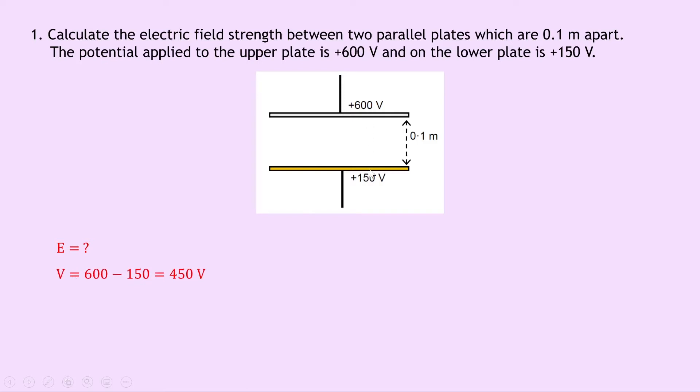Remember, between the upper and lower plate voltages. So we've got 600 minus 150, which gives us a potential difference of 450 volts. And the distance D between them is 0.1 metres.